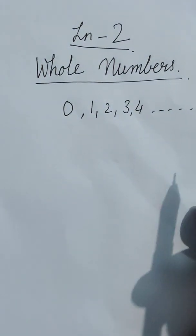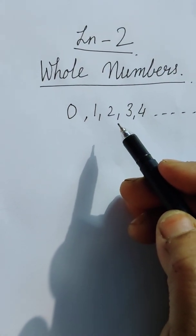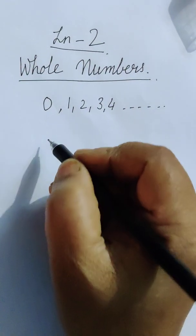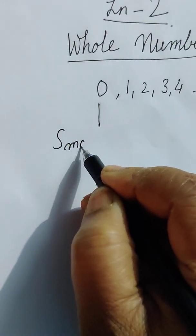it is called whole number. That means all natural numbers together with 0 are called whole numbers. This means that 0 is the smallest whole number.